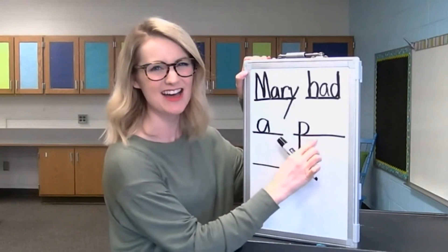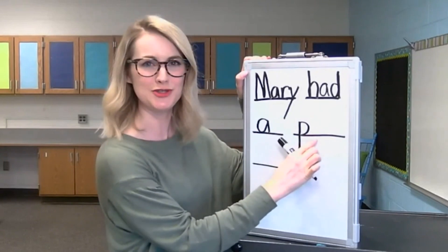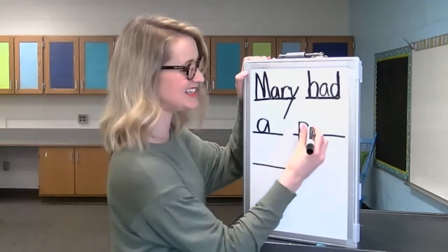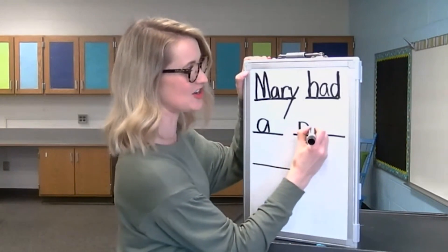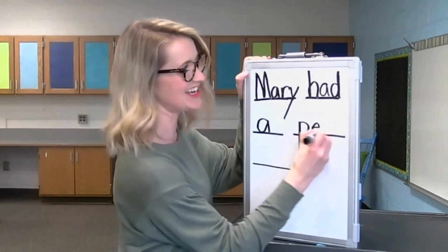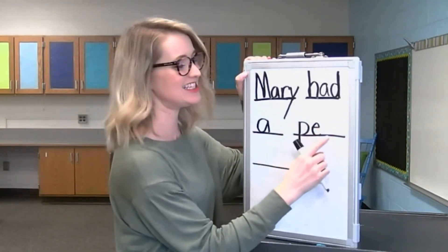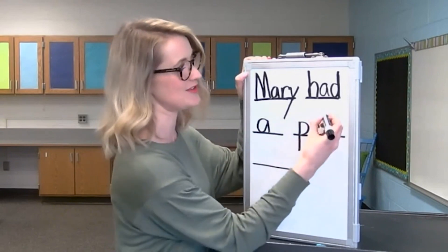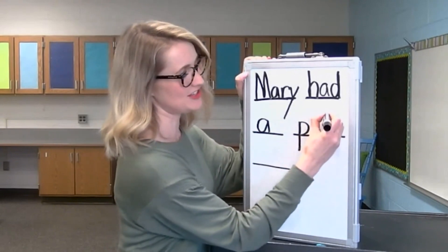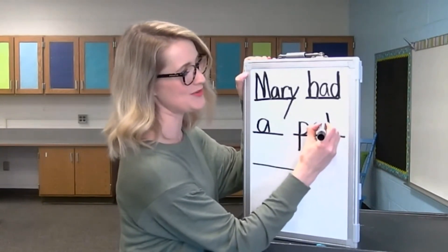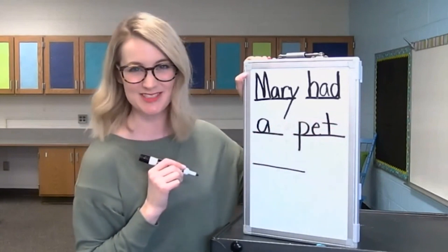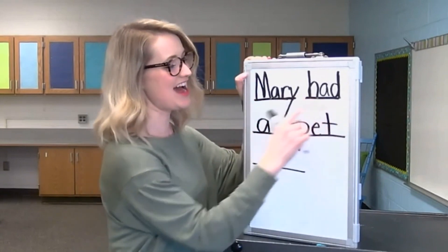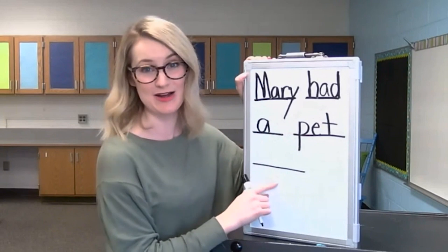P-e-t. What vowel do you hear in that word? An E. Start in the middle, slide over, up, and around like a C. P-e-t. We hear a T at the end of that word. Start at the top, slide down, back up, and slide to the right. We're almost there. Let's read our sentence: Mary had a pet lamb.